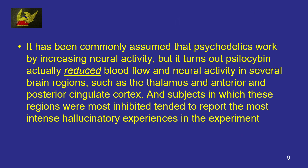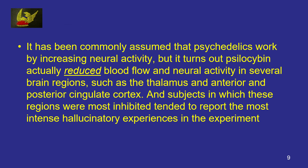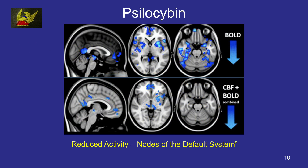It has been commonly assumed that psychedelics work by increasing neural activity. But it turns out that psilocybin actually reduced blood flow and neural activity in several brain regions. And subjects in which these regions were most inhibited tended to report the most intense hallucinatory experiences in the experiment.